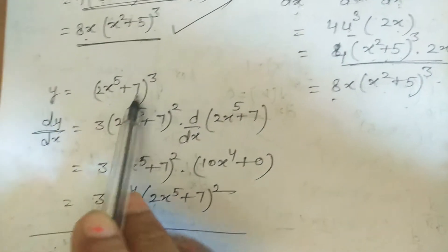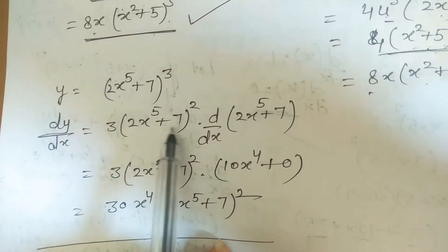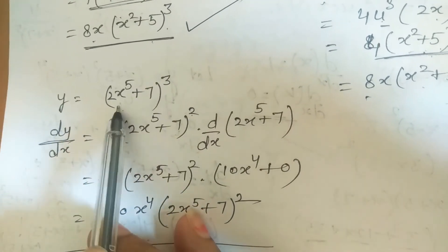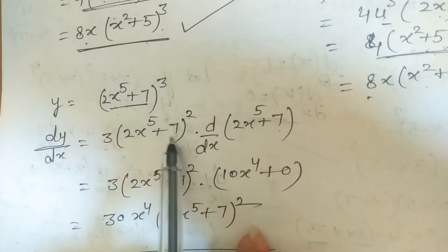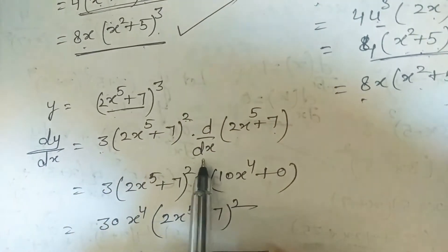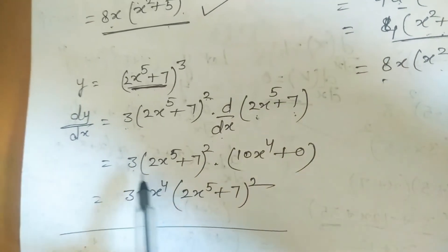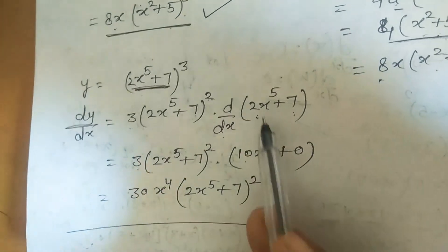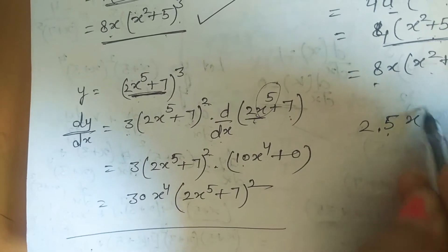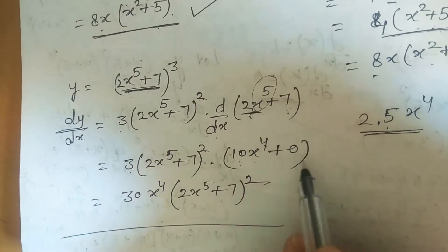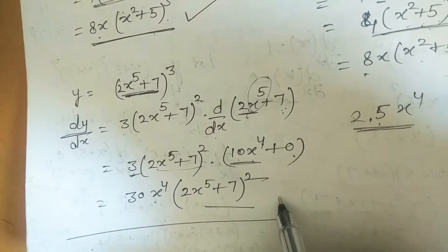Example: y = (2x^5+7)^3. Apply chain rule: 3·(2x^5+7)^2·d/dx(2x^5+7). Derivative of 2x^5 is 10x^4 and of 7 is 0. So answer = 3·(2x^5+7)²·10x^4 = 30x^4·(2x^5+7)².